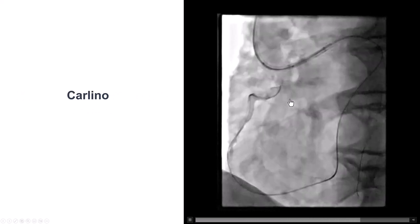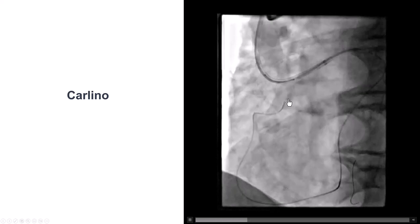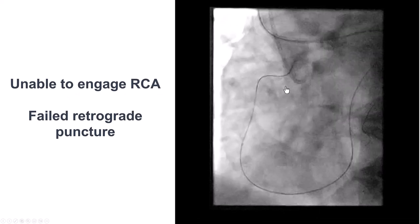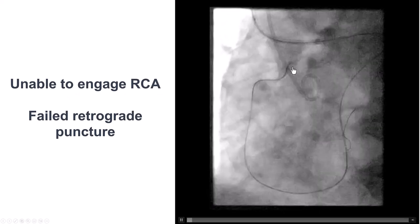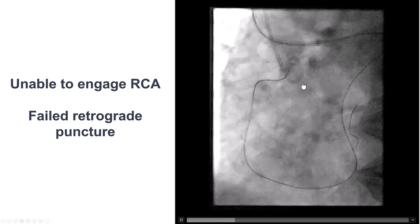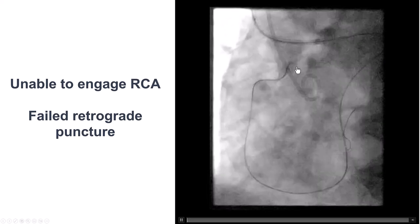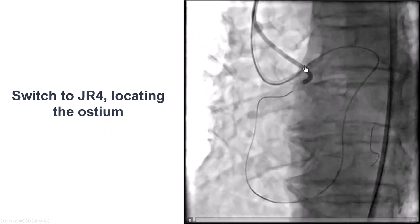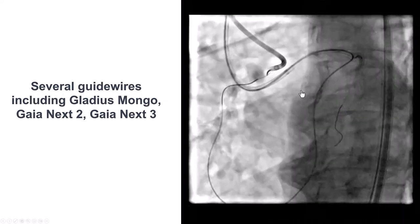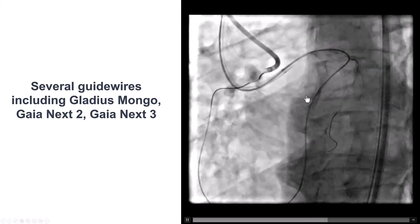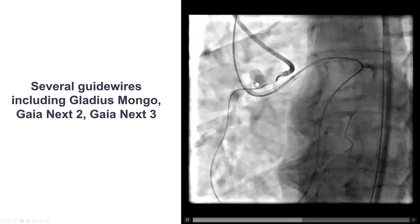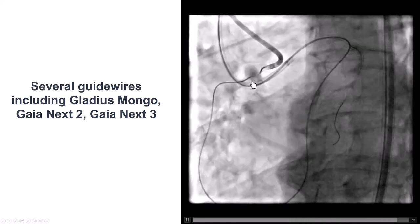So we did the Carlino technique, injecting a small amount of contrast into the microcatheter. There seems to be wiring in the extraplaque space close to the ostium of the vessel. We could not puncture retrograde, and we tried to engage antegrade, which we could not do. We used a pigtail as a marker for retrograde puncture. We considered using Icard but ended up not doing that. We then used a JR4 that seemed to be a little more aligned, with some contrast seen there. Despite using several guidewires — including the Gladius-Mongo, Gaia Next-2, and Gaia Next-3 — we had difficulty advancing antegrade equipment, although it looked like we were coming close to the course of the vessel.